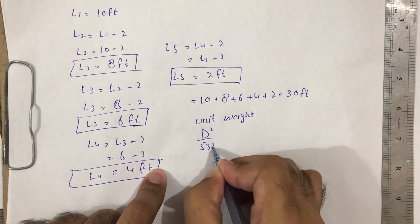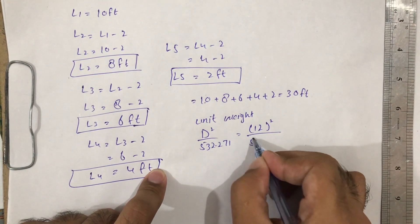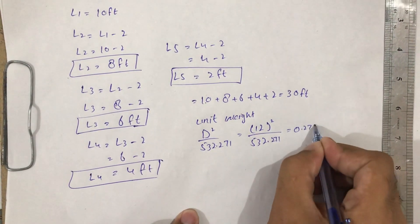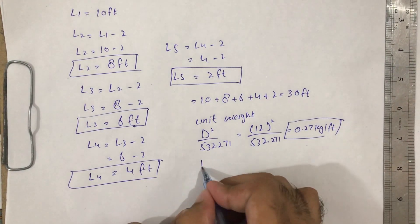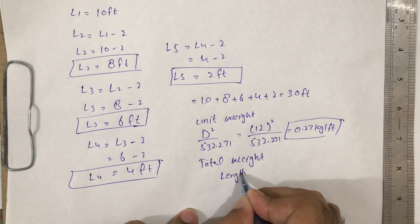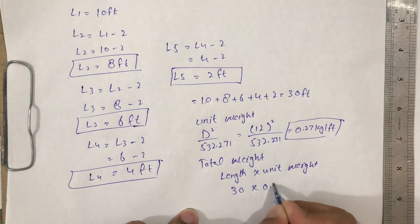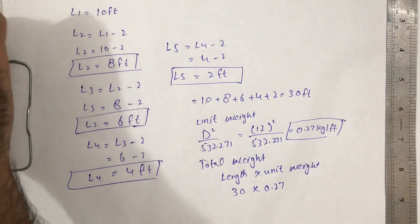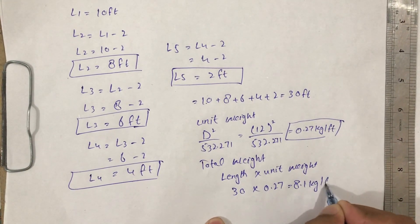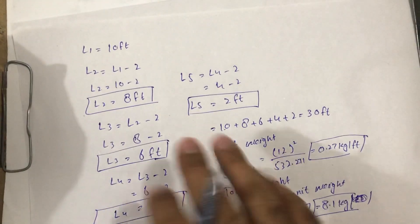The unit weight formula is d² divided by 532.271, where d is 12 mm. This gives us 0.27 kg per foot. The total weight is length times unit weight, which is 30 times 0.27, giving a total weight of 8.1 kg for this triangular slab.